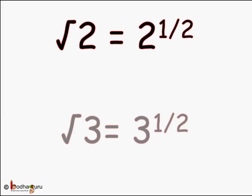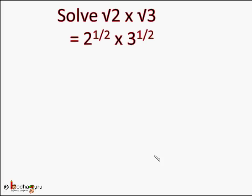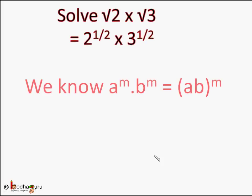Same way, square root of 3 is equal to 3 to the power 1 by 2. What will be the value of square root of 2 into square root of 3? That will be equal to 2 to the power 1 by 2 into 3 to the power 1 by 2. We know a to the power m into b to the power m is equal to (ab) whole to the power m — that is, if the bases are different and exponents are same, we can multiply both the bases, put a bracket, and put the exponent outside the bracket. So here a is equal to 2.